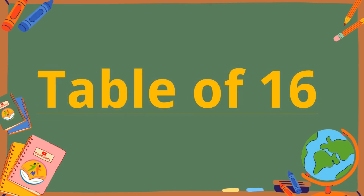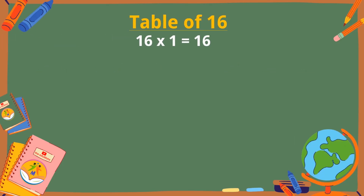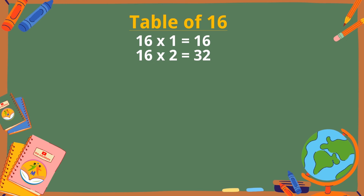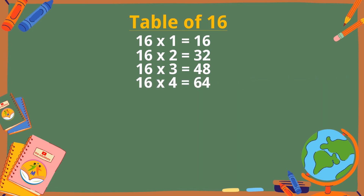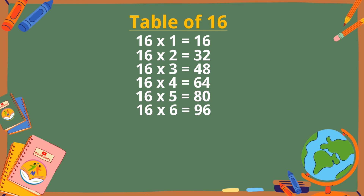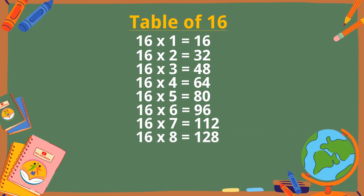Table of 16. 16 ones are 16, 16 twos are 32, 16 threes are 48, 16 fours are 64, 16 fives are 80, 16 sixes are 96, 16 sevens are 112, 16 eights are 128, 16 nines are 144, 16 tens are 160.